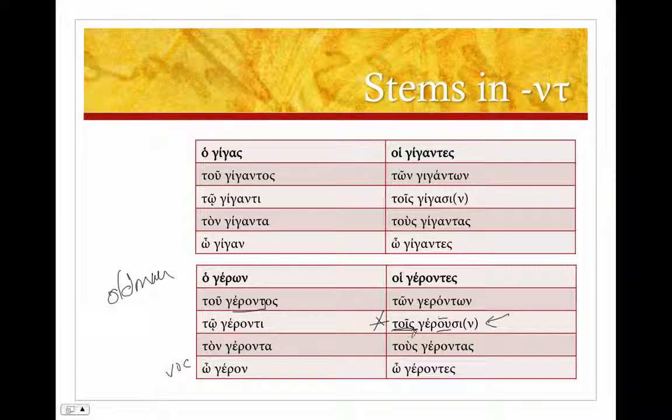Two ways to help you with this. First, a verb will never have an article. And second, the stem here. The stem happens to be a noun stem, not a verb stem. So those are the two ways to help you distinguish between a dative plural and a third-person plural present active indicative.